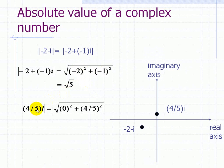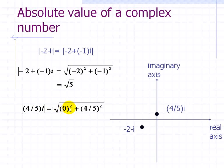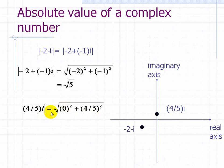Let's look at another example. Here we have a pure imaginary number with no real component — it's just (4/5)i, and we want to find the distance. So we have 0² for the real component squared, plus (4/5)² for the imaginary component, and we take the square root of that, which yields simply 4/5. So the distance from this point to the origin is 4/5.